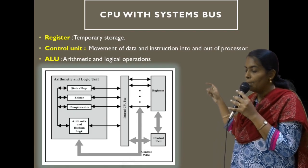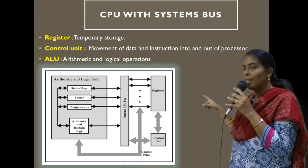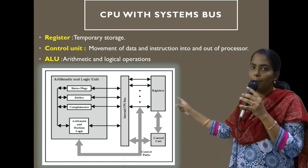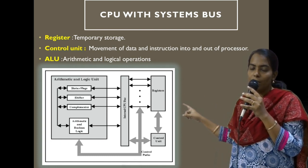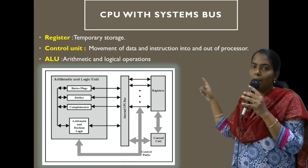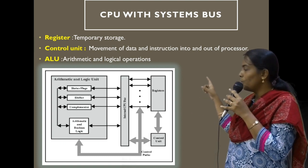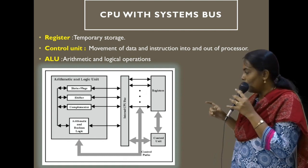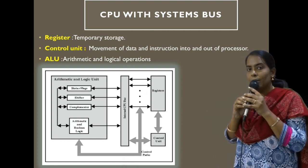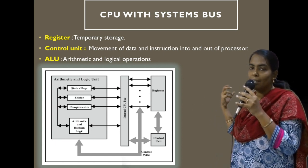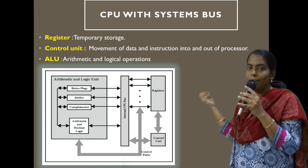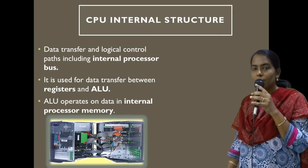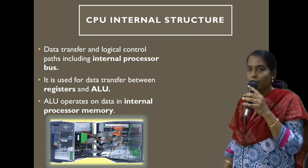Within this CPU we have an ALU, registers, and a control unit. The ALU performs arithmetic and logical operations. Registers are mainly used for temporarily storing data during computation. The control unit is responsible for moving data into and out of the processor.